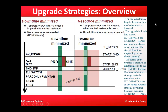The upgrade strategy helps determine how much downtime is involved. The upgrade is divided into two main phases: EU_IMPORT and MOD_PROF_TRANS, which are the most important phases as they mark the start of downtime. The resource minimized strategy starts downtime in the EU_IMPORT phase, while the downtime minimized strategy begins downtime in the MOD_PROF_TRANS phase.